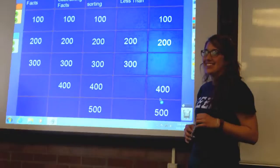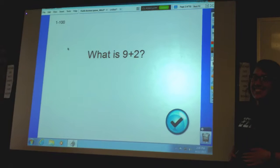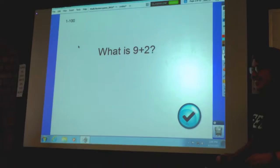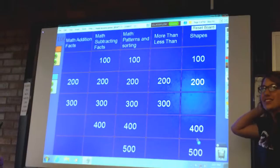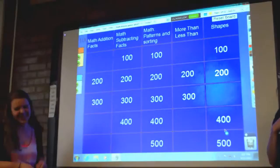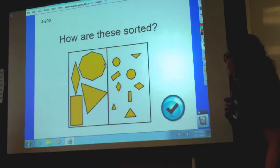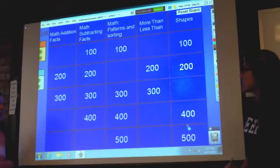We've got Sharon. Math patterns for 200. How are they sorted? Five sides. Big and little. Size, by size. And you can get a candy.